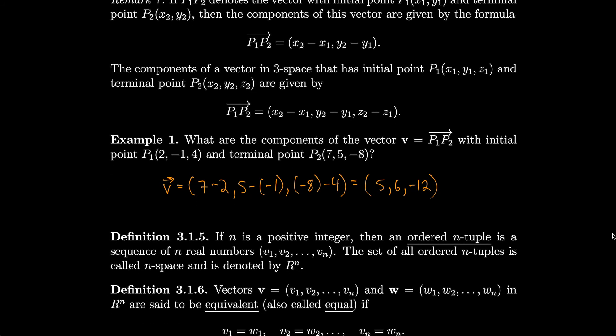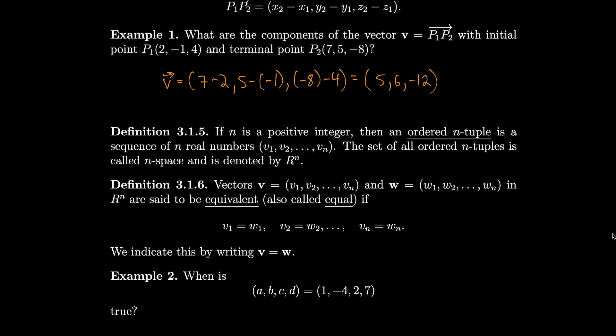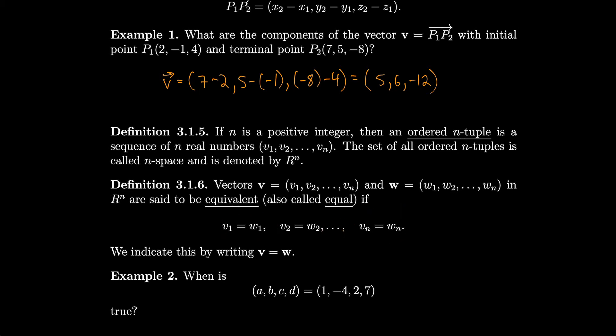If n is a positive integer, then an ordered n-tuple is a sequence of n real numbers v1, v2, through vn. The set of all ordered n-tuples is called n-space and is denoted by R^n. Everything we've done in 2-space and 3-space was pretty much the same and can be generalized to 4-space, 5-space, 6-space, and so on. Vectors v equals (v1, v2, ..., vn) and w equals (w1, w2, ..., wn) in R^n are equal if v1 equals w1, v2 equals w2, all the way through vn equals wn, written v equals w.